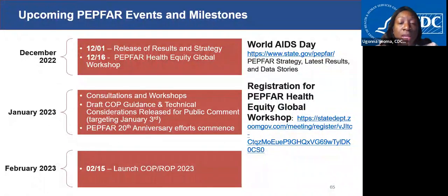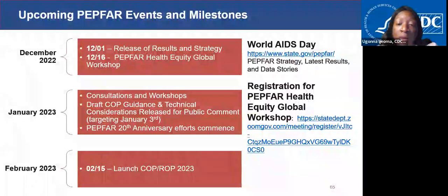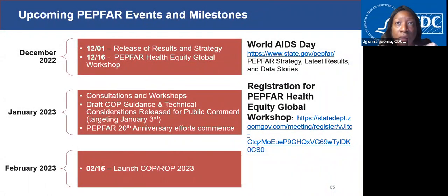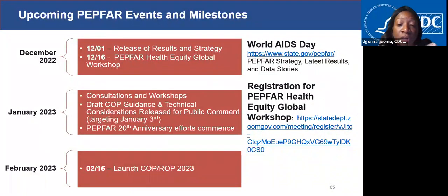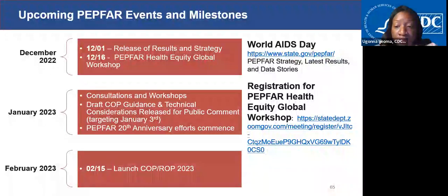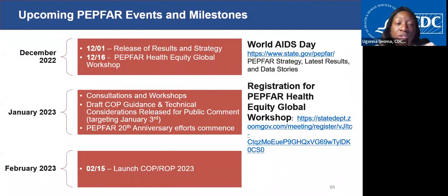We are walking towards the mid-February launch of our COP23 process, which is when we'll begin planning for the next fiscal year. We just released our new five-year PEPFAR strategy. On December 16th, we'll be hosting a virtual health equity global workshop to co-create a roadmap of program priorities and partnerships to identify and close major gaps in service delivery and new infections for priority populations, including key populations. Key questions will be around new partnerships, interventions to create enabling policy environments, how to strengthen community leadership, and ensuring new treatment and prevention tools are people-centered.